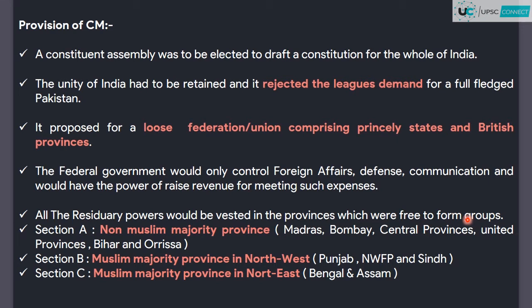Basically, the provinces were divided into three sections. Section A included non-Muslim majority provinces: Madras, Bombay, Central Province, United Province, Bihar, and Orissa. Section B included Muslim majority provinces in the north-west, like West Pakistan — Punjab, North West Frontier Province, and Sindh. Section C included Muslim majority provinces in the north-east, like East Pakistan — Bengal and Assam.